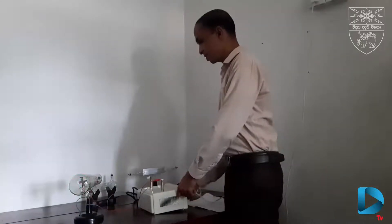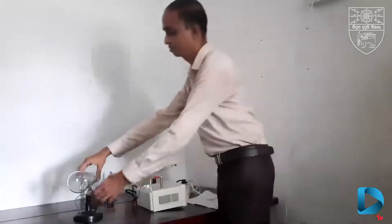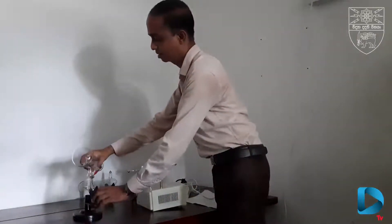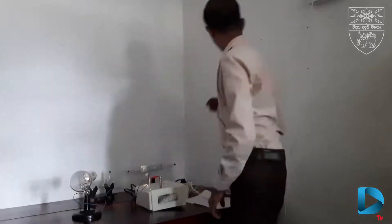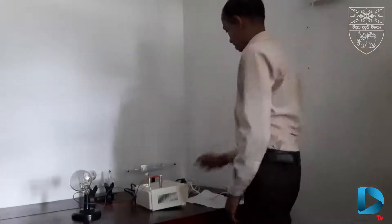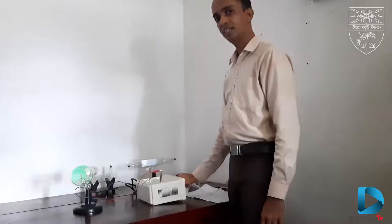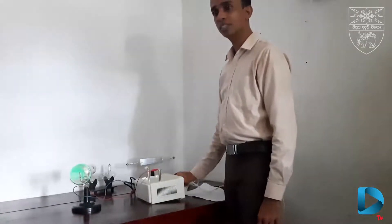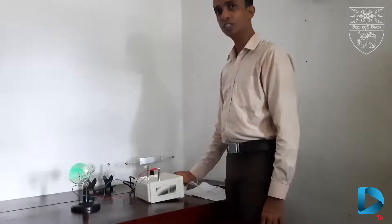Now I will remove the metal cross. I have removed the metal cross, then supply the high voltage. Now you cannot see the shadow. That proves the cathode rays travel from cathode to anode in a straight line.